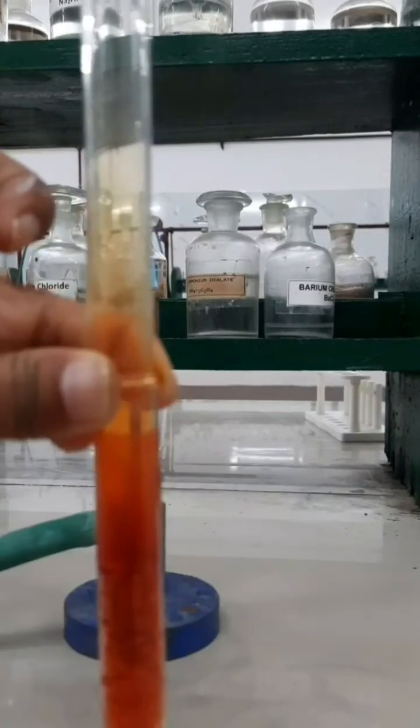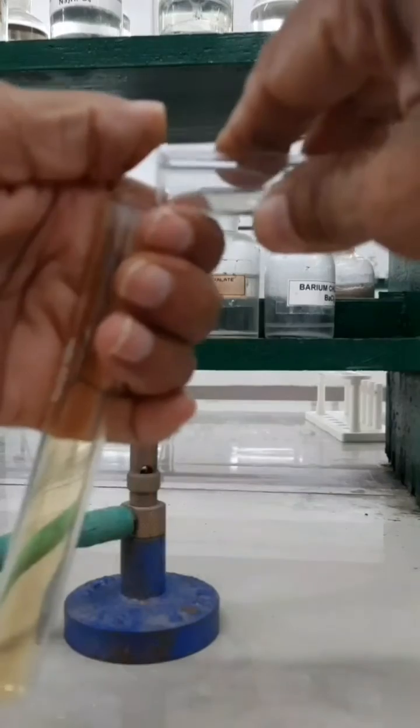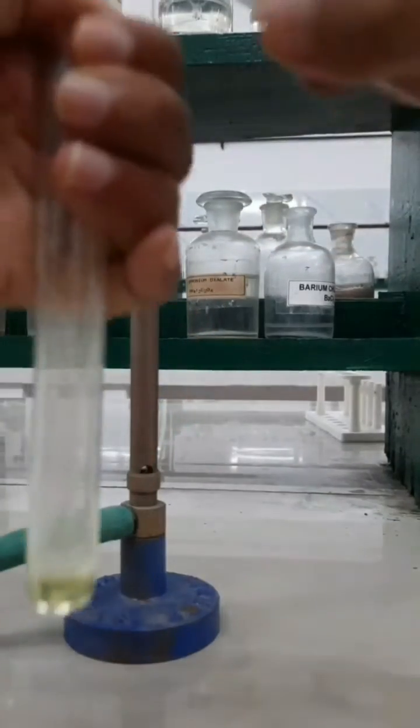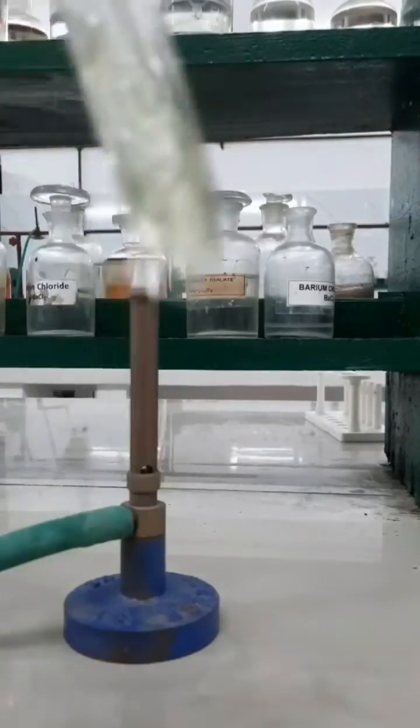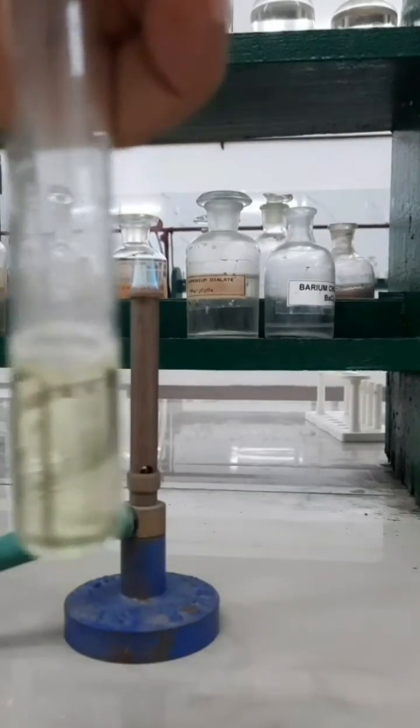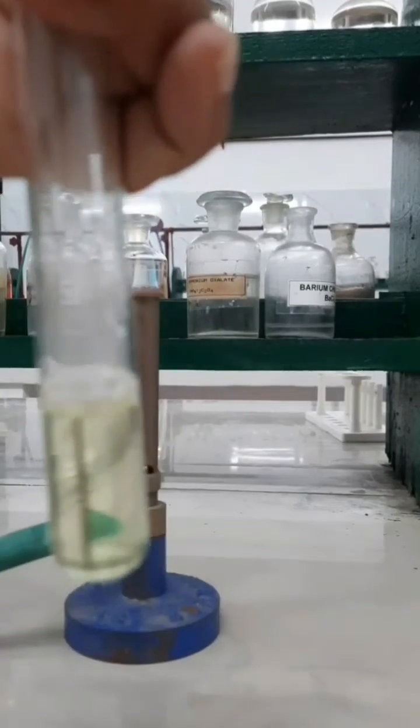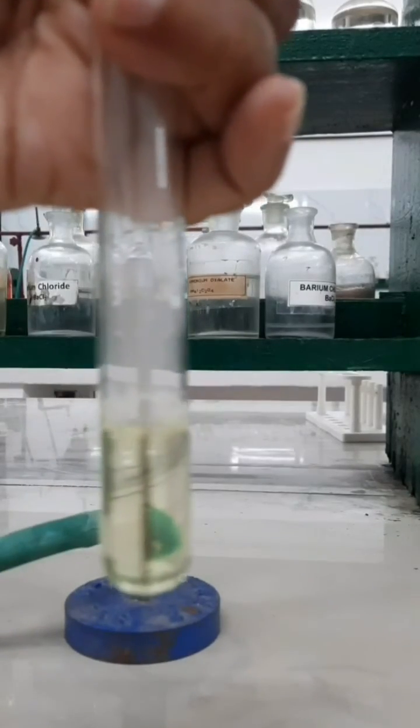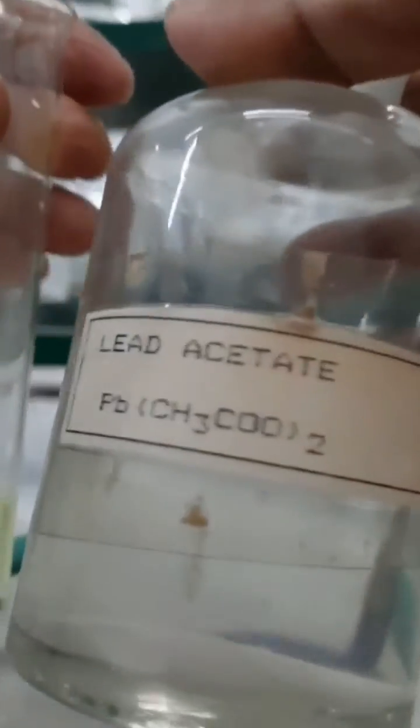Collect the vapor by placing an inverted test tube over the first one. Remove the test tube and then add sodium hydroxide solution into it and shake it properly. A light yellow solution of sodium chromate will be obtained.